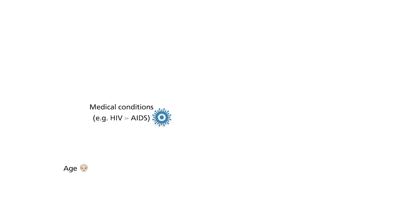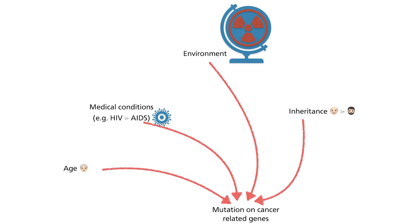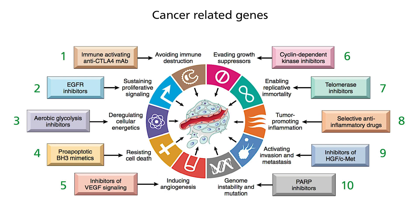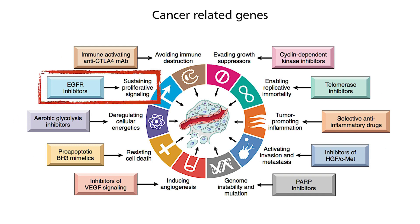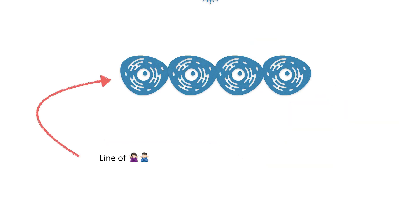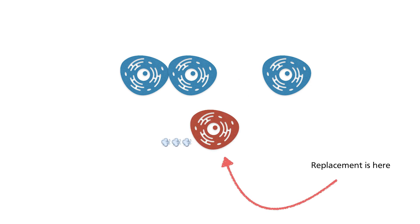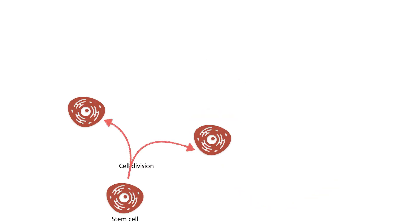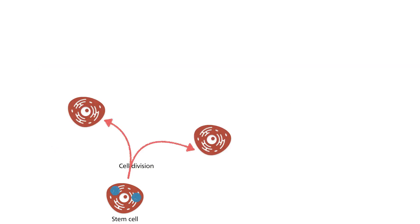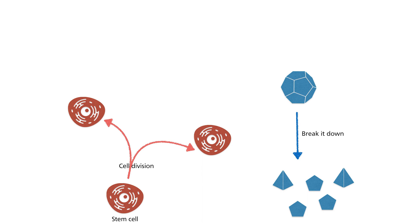So how do cancers arise? This is multifactorial and can be due to age, medical conditions, environment, or inheritance. All of these factors lead to the accumulation of mutations of cancer-related genes. Genes involved with growth stimulation are one such category. There are times when growth is required — for example, we lose skin cells round the clock. Since these cells are an important barrier to foreign bodies, new skin cells are made to replace those lost, and cells undergo division to do that. When they do, genes that encode proteins resulting in growth stimulation are activated. Once the process is completed, these genes have to be silenced or the proteins have to be inactivated.